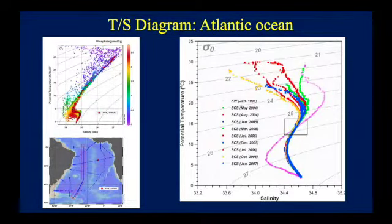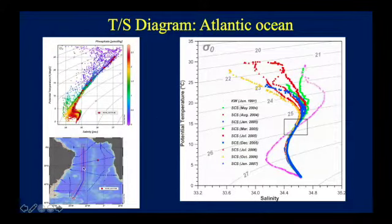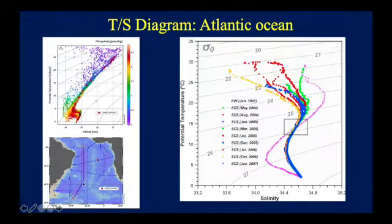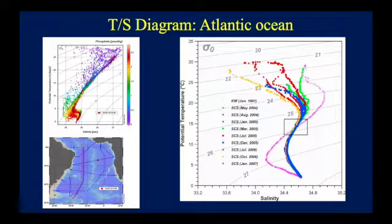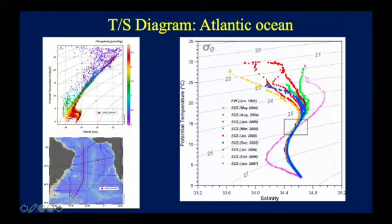Let me give another example in the Atlantic Ocean. In different areas of the plots you can see lots of different TS diagrams. For instance, in the South Atlantic Ocean, this shows more than 1000 plots along one line. When you plot everything and take the average, you can tell that there are basically four types of water masses in that area. Even with lots of data sets, you can still see a clear pattern.